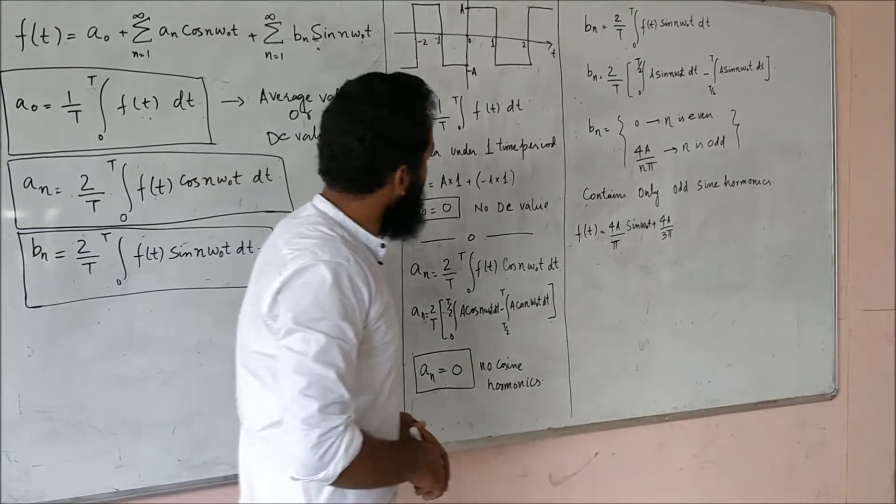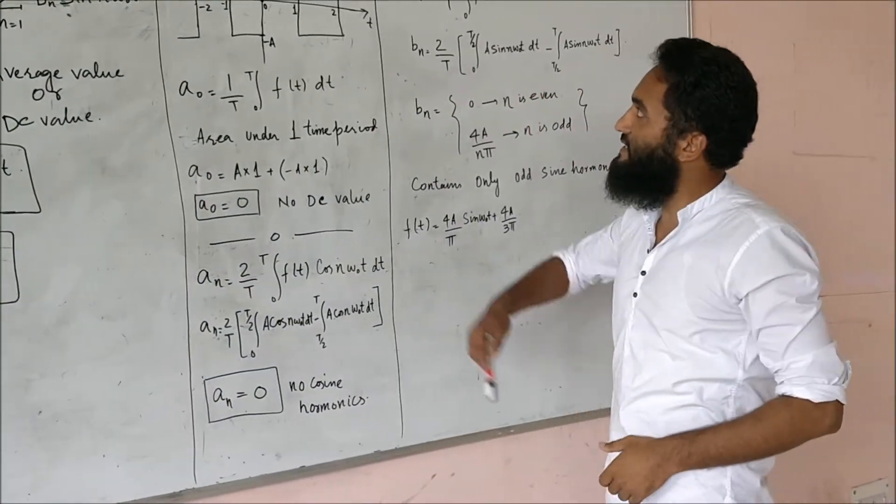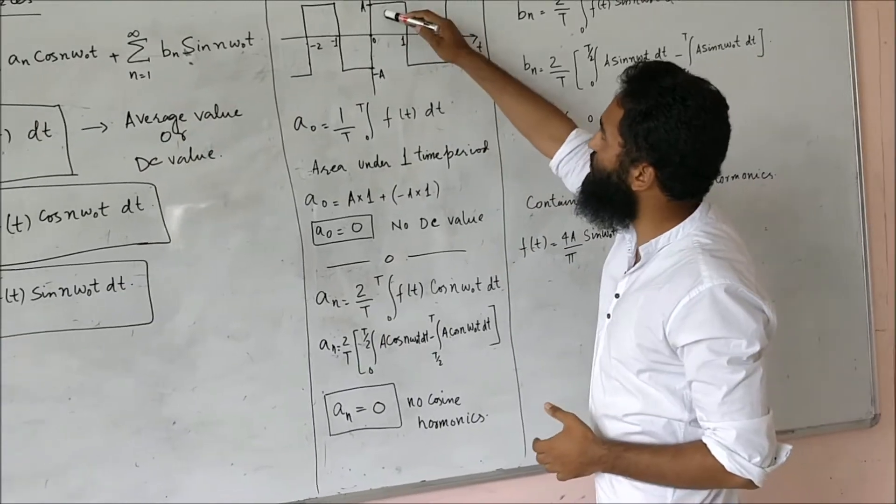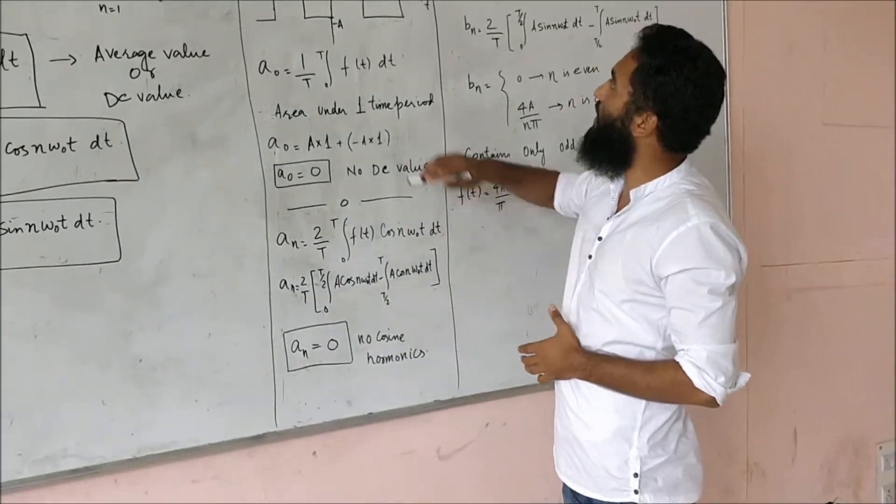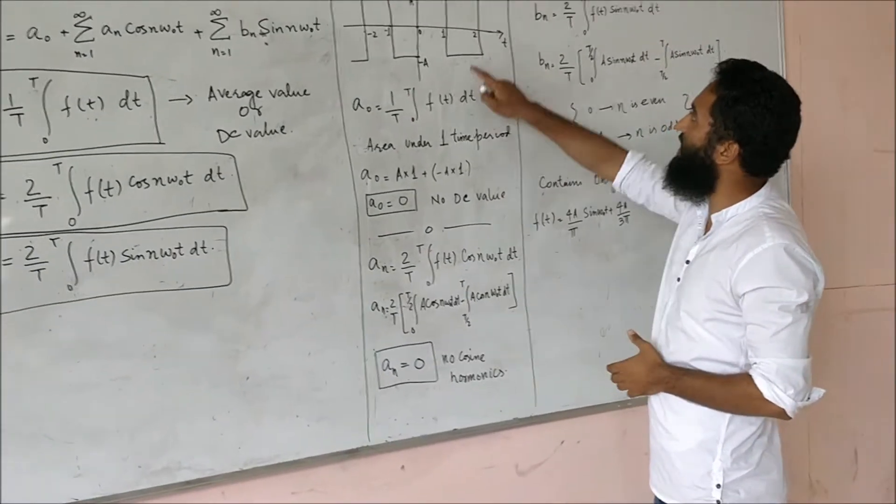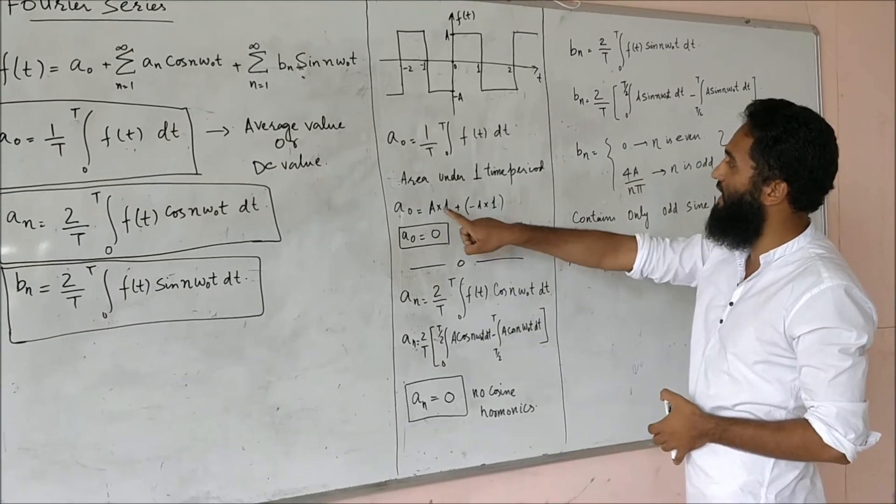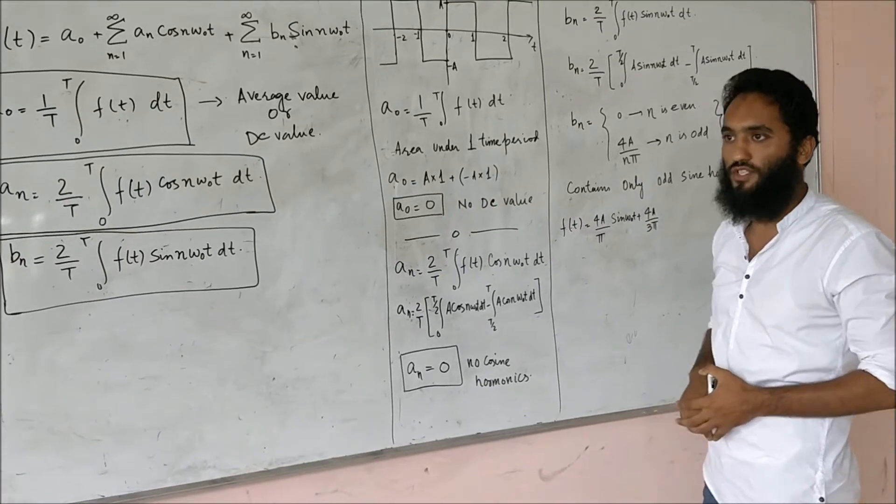If I take the areas, I can say for 0 to 1 seconds I have the positive A area and for 1 to 2 seconds I have the negative A area. The total area under the signal in one time period will be A minus A which equals 0.